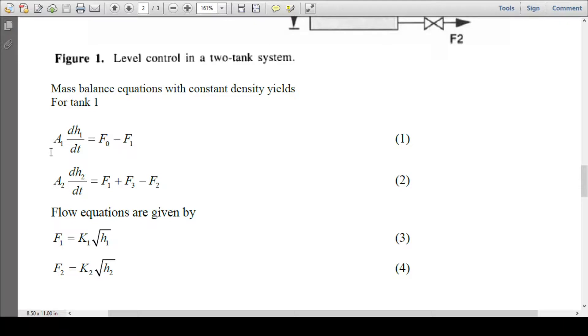If we multiply density here, this is the mass balance actually, but density got cancelled for constant density system. Now, flow rate F1 would be given as a function of level in tank 1: F1 = K1√H1. Flow rate of tank 2 can be given by F2 = K2√H2.